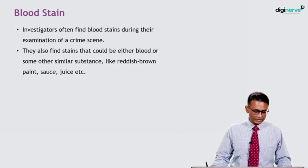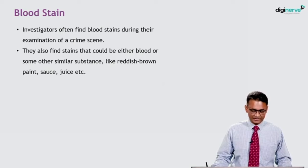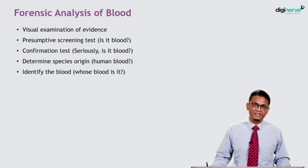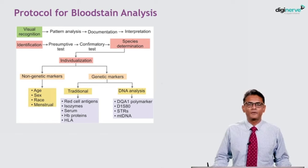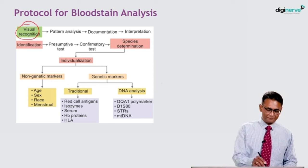Investigators often find blood stains during the examination of a crime scene. They also find stains that could be either blood or some other similar substance like reddish-brown paint, sauce, juice, rust, etc. The forensic analysis of blood involves: first, visual examination of evidence; then a presumptive screening test — is it blood? Then a confirmation test — seriously, is it blood? Then determine species of origin — whether it is human blood or another species. Finally, identify the blood — whose blood is it?